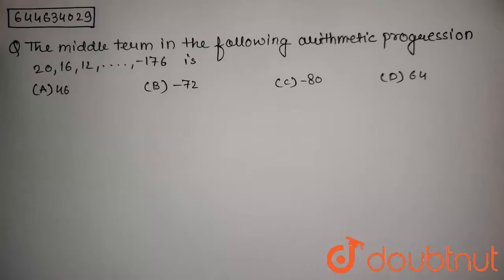The question is: the middle term in the following arithmetic progression 20, 16, 12, and so on till -176 is.